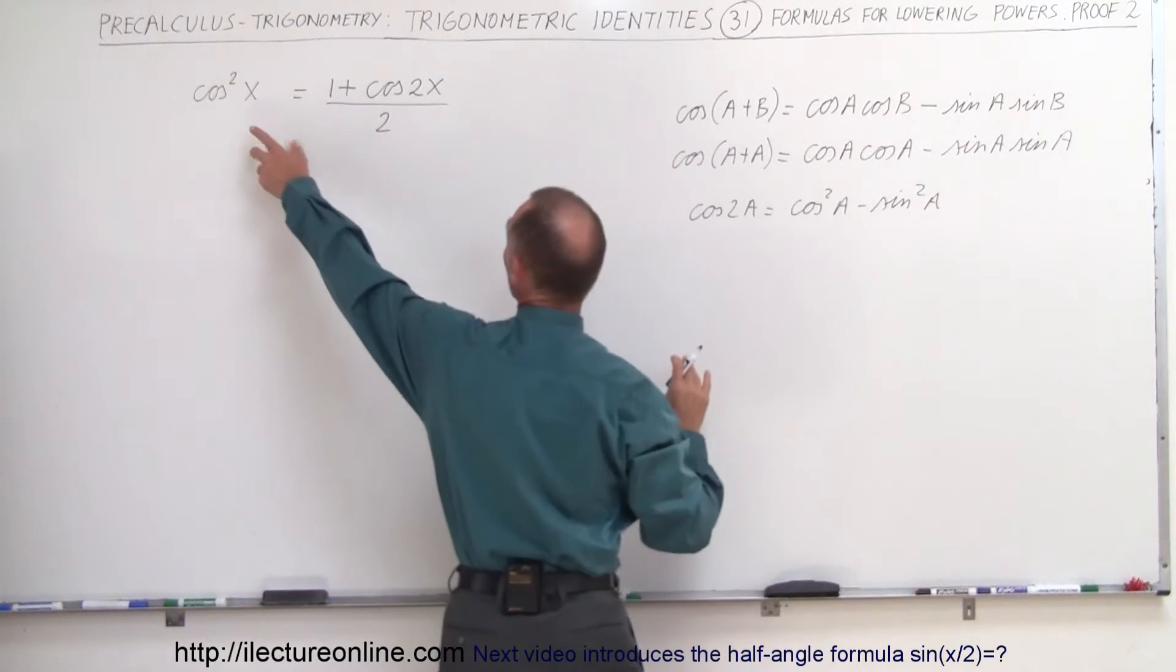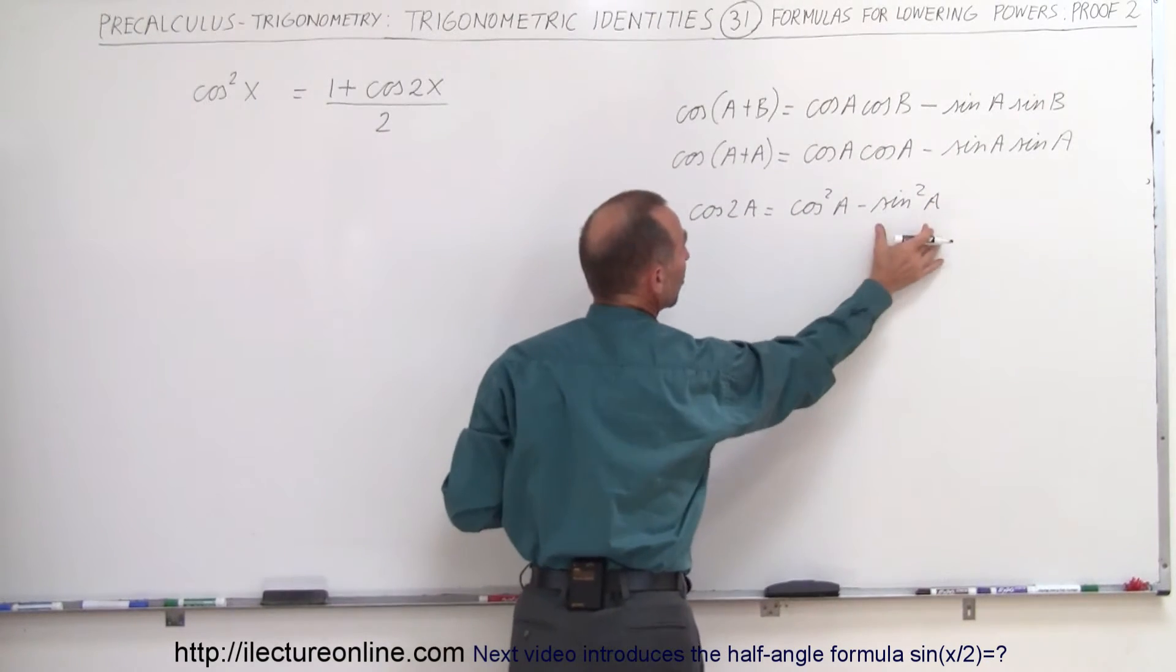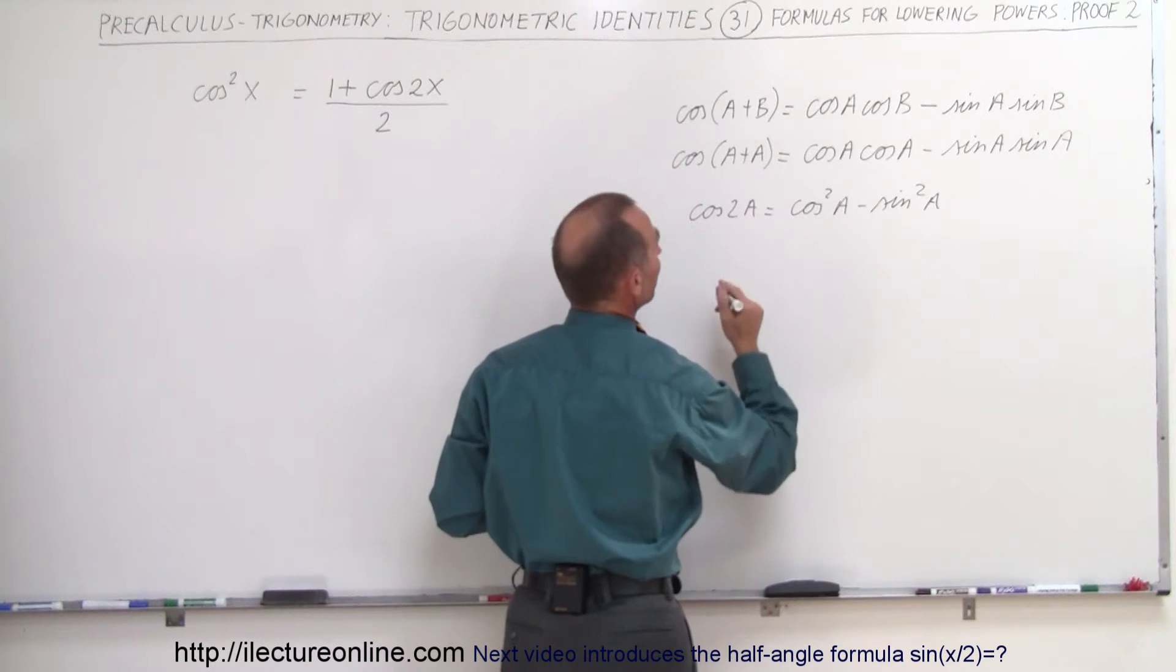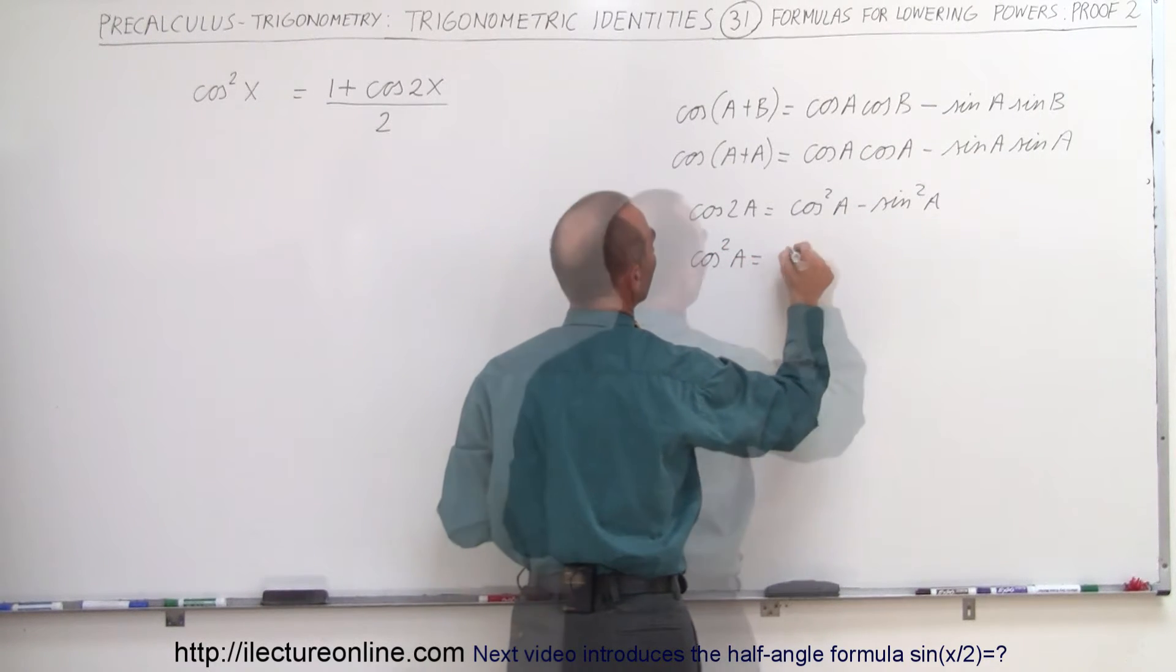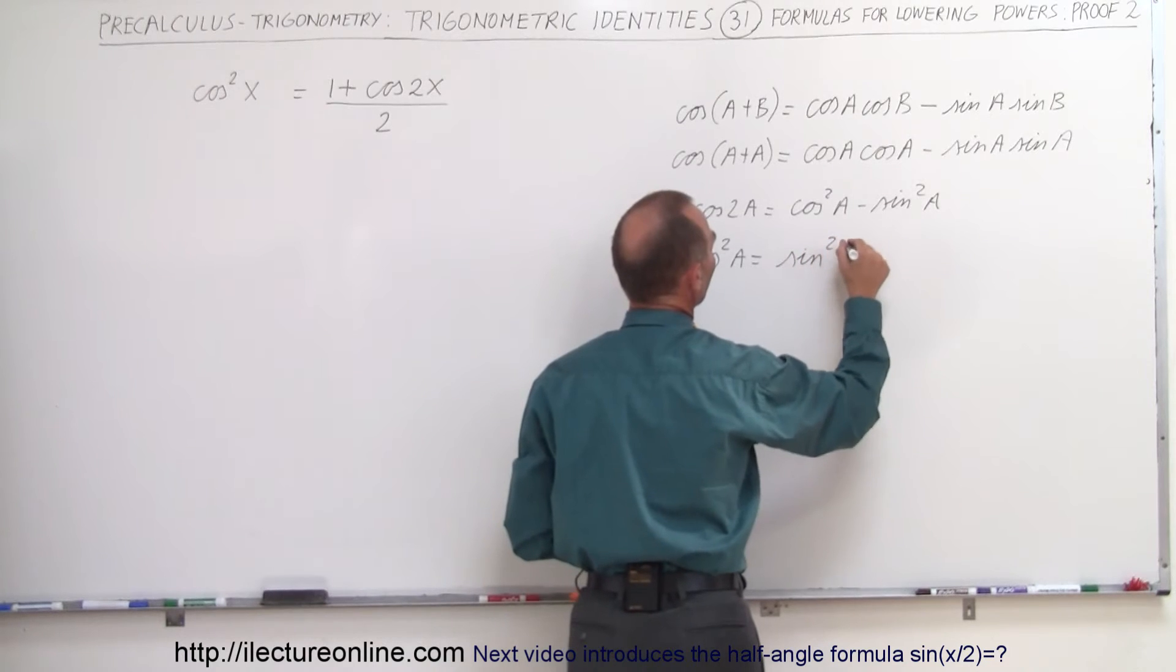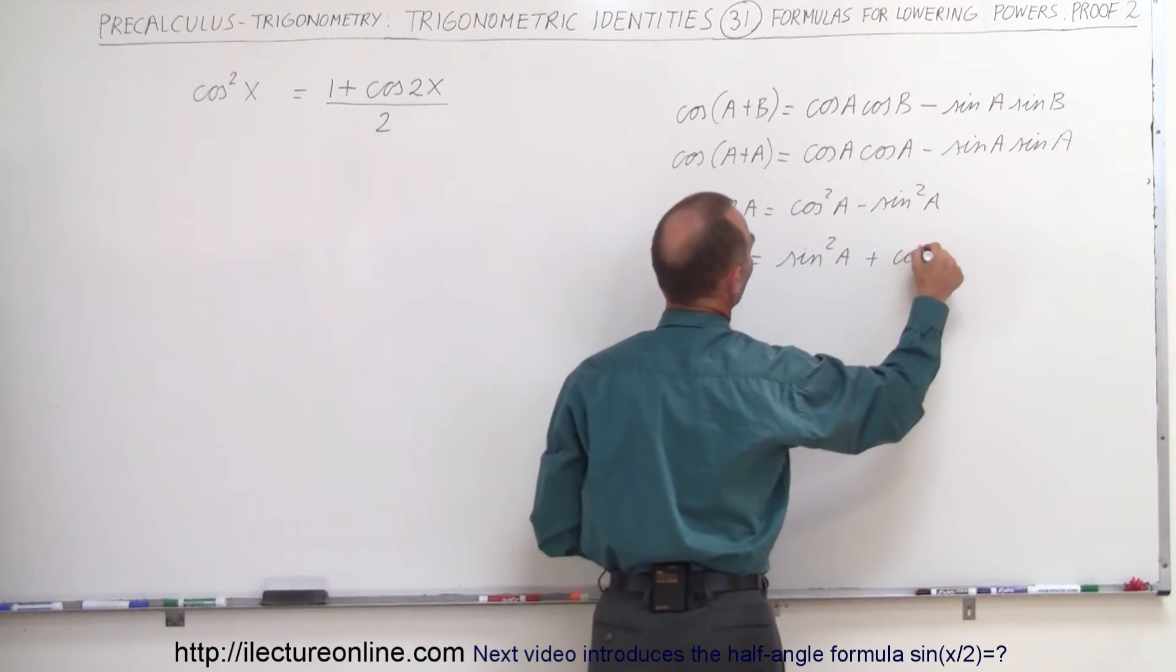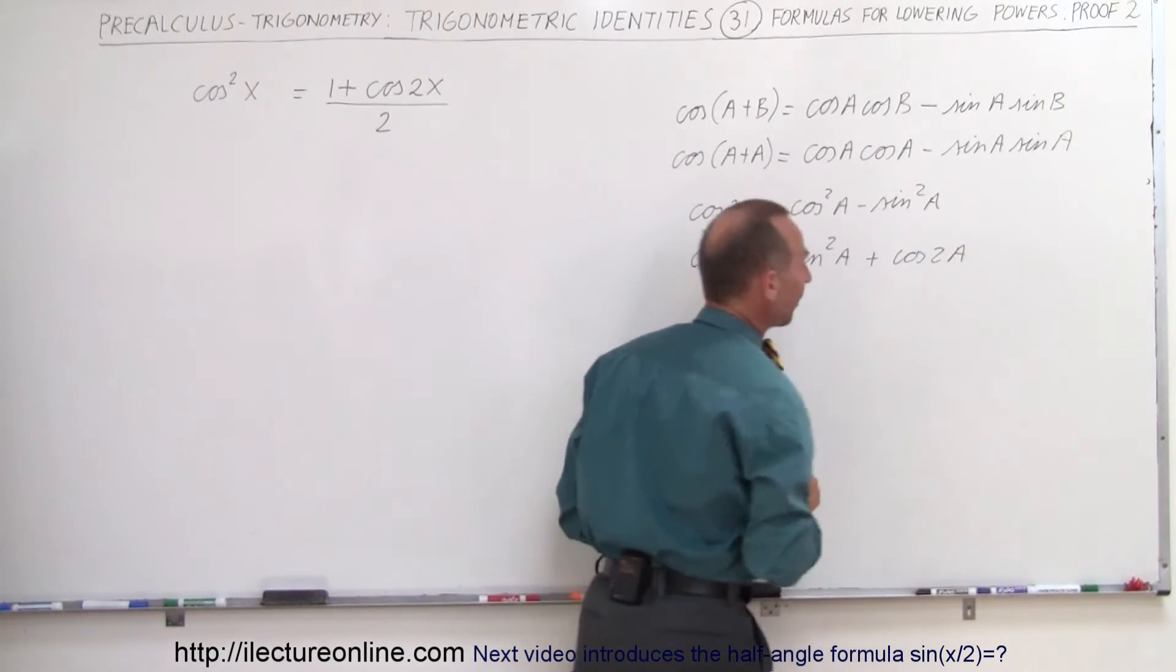And of course then we want to solve that equation for the cosine so we move this to the other side and flip the equation around so we have the cosine squared of a is equal to the positive sine squared of a plus the cosine of 2a.